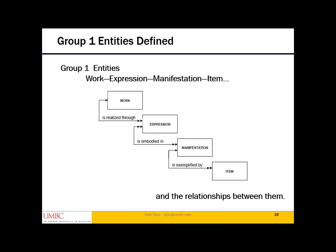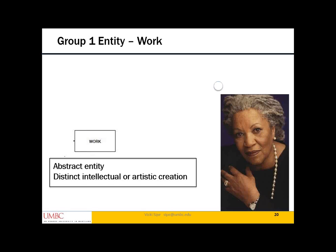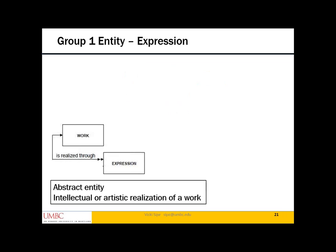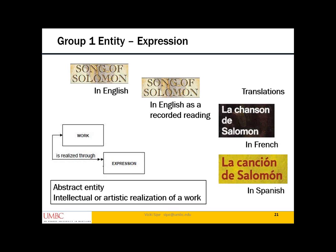This diagram from FRBR shows the Group One entities — the things we're describing — and the relationships between them. First, a Work is an abstract entity — a distinct intellectual or artistic creation. It's when Toni Morrison has the idea of Song of Solomon — still abstract, still just a thought in her head. A Work is realized through an Expression. An Expression is the idea of the work in a form, still abstract — so it would be the idea of Song of Solomon in English, or as a recorded reading, or in translation into French or Spanish. Each of these is an expression of the work, but they're all still abstract.